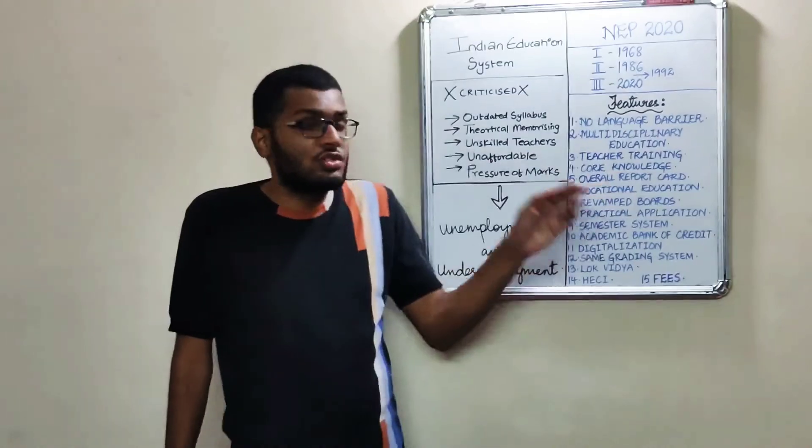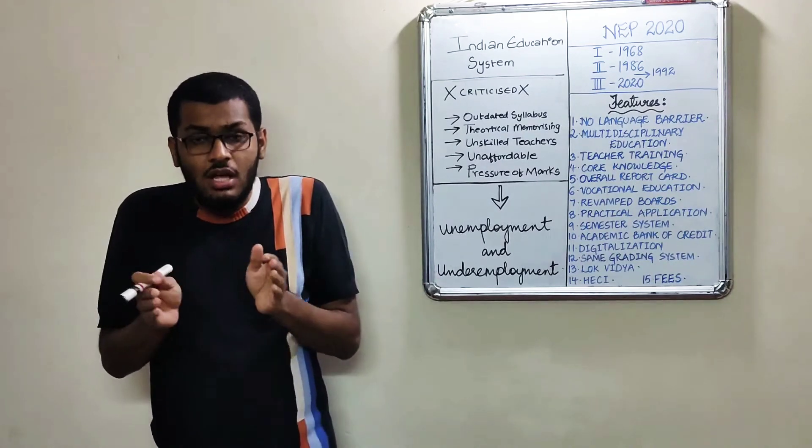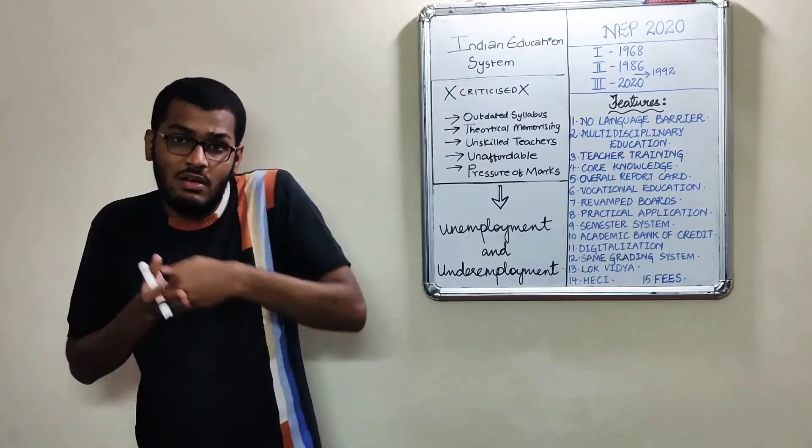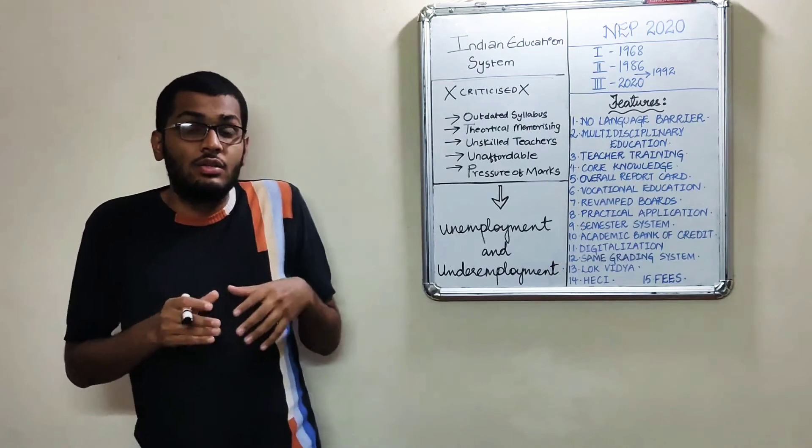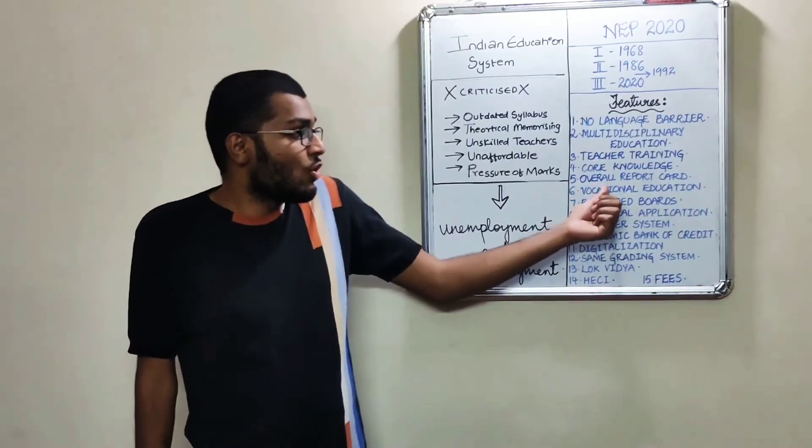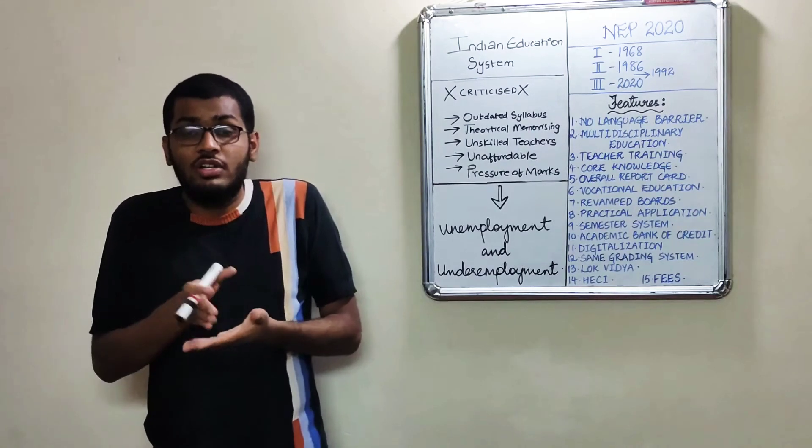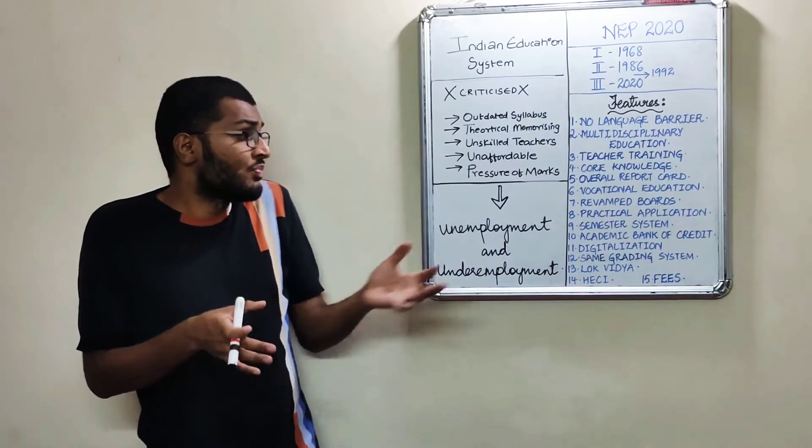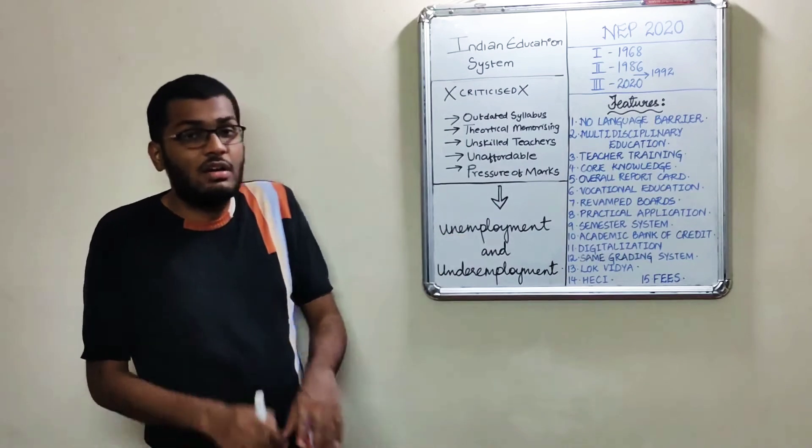Number four is focus on core knowledge. Rather than on broad subjects, you will focus on core knowledge, the more important concepts, so that you focus on your retention power and understanding. You will not have to grab more content - you will take the most important things and have a better perspective about that subject. The fifth one is overall report card. The report card till now has been mostly based on marks, but now from now on they are planning to have an overall report card in which your skills will be measured along with marks - different skills like interpretation skills, aptitude skills. Your report card is going to be an overall analysis of your life development.